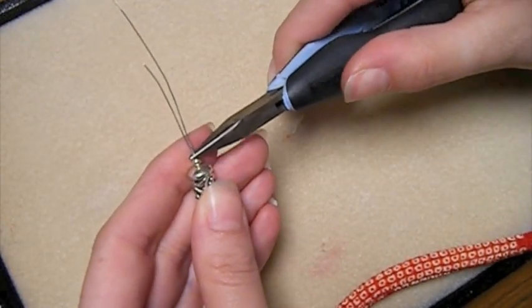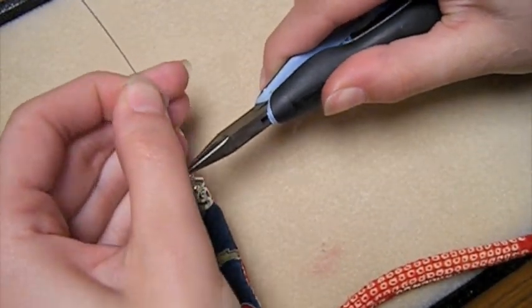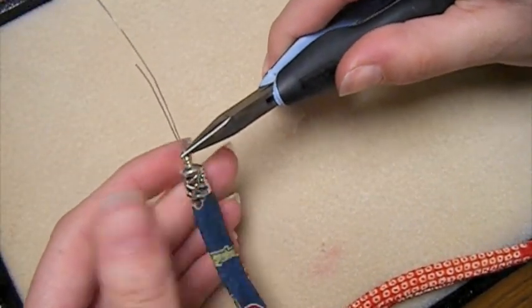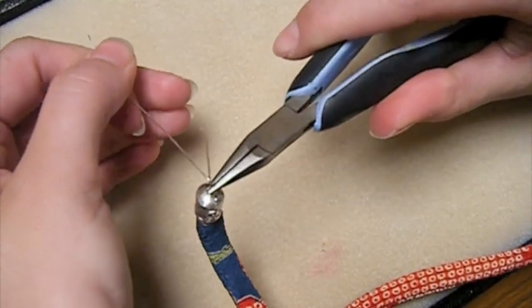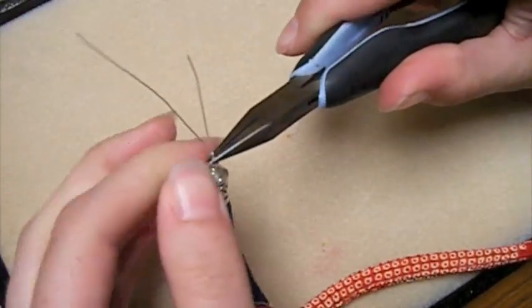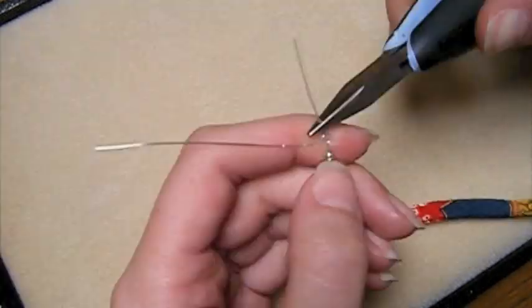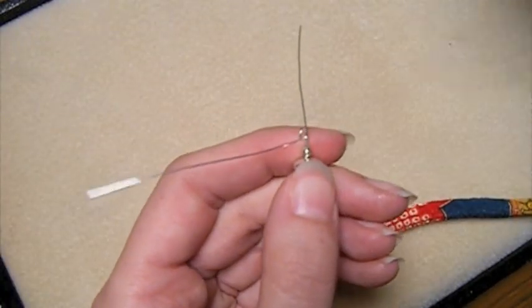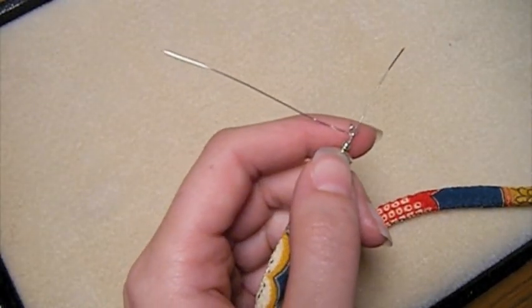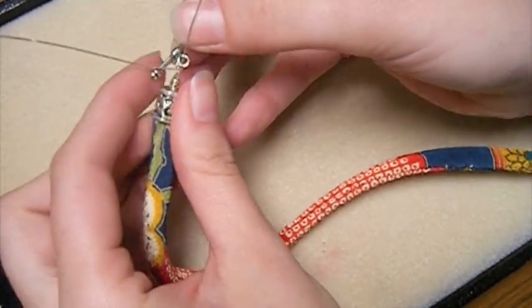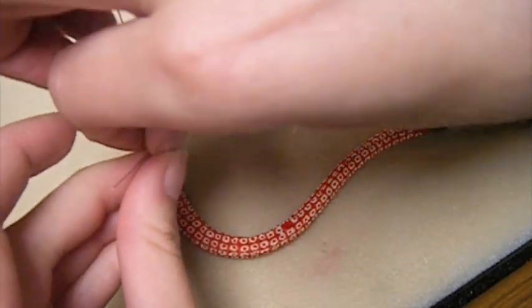So you have it set up the same way. And for anyone who needs a refresher on how to briolette wrap you can go to www.beadshop.com and it is in our free tips and techniques section. So you do your briolette wrap. So the only difference is that instead of capping your briolette, you're just going to wire wrap down to that bead. So you get your clasp on.